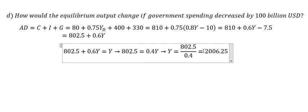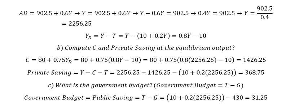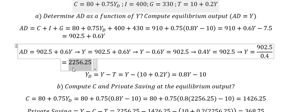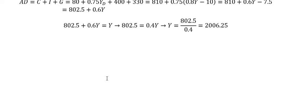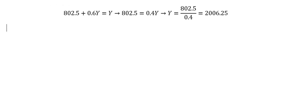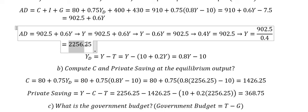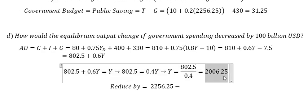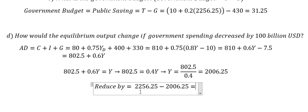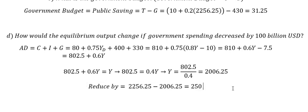So we see that this equilibrium is about 2006.25. But in here, this is about 2256.25. So they will reduce about equilibrium by... we use this number in here minus about this number. So we have the final answer, that is about 250, and this is the final answer of the question.